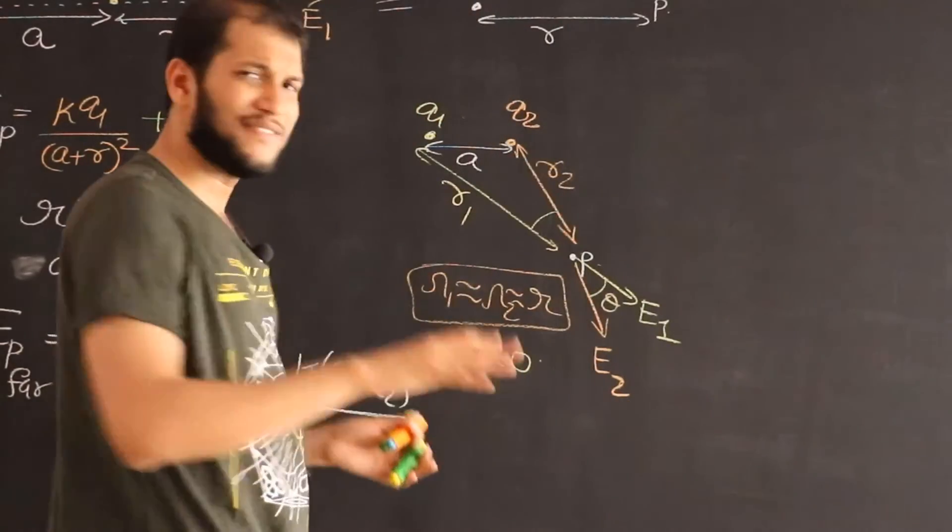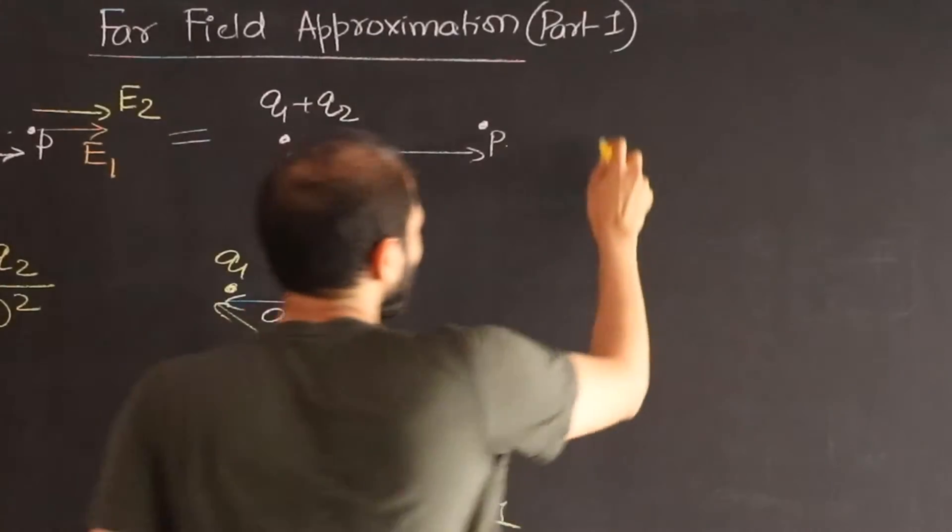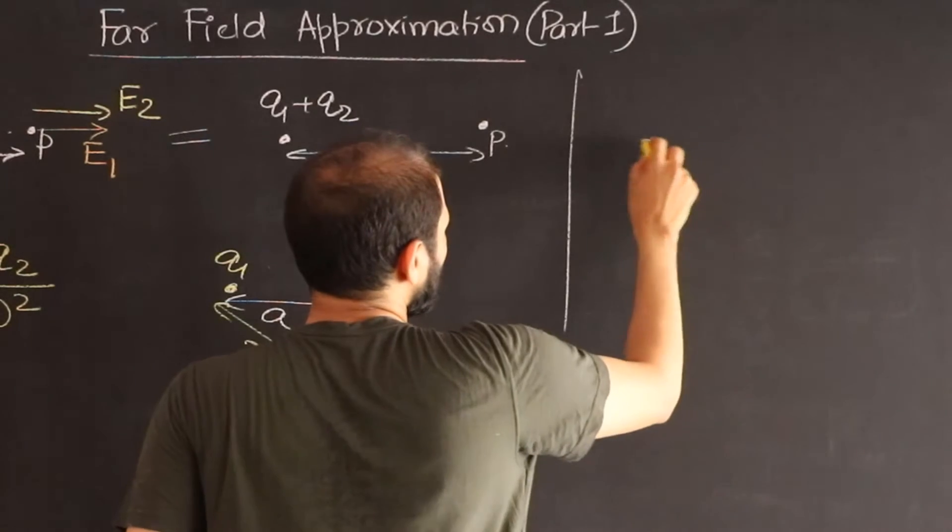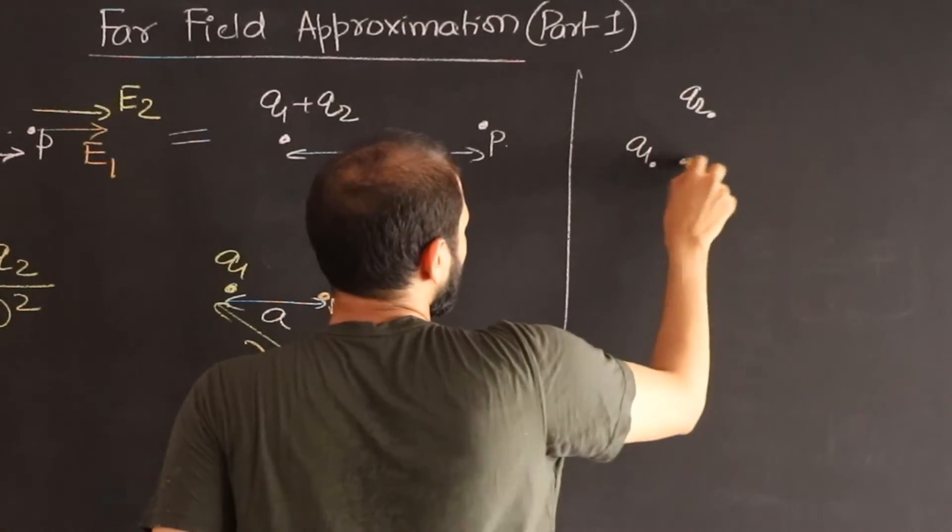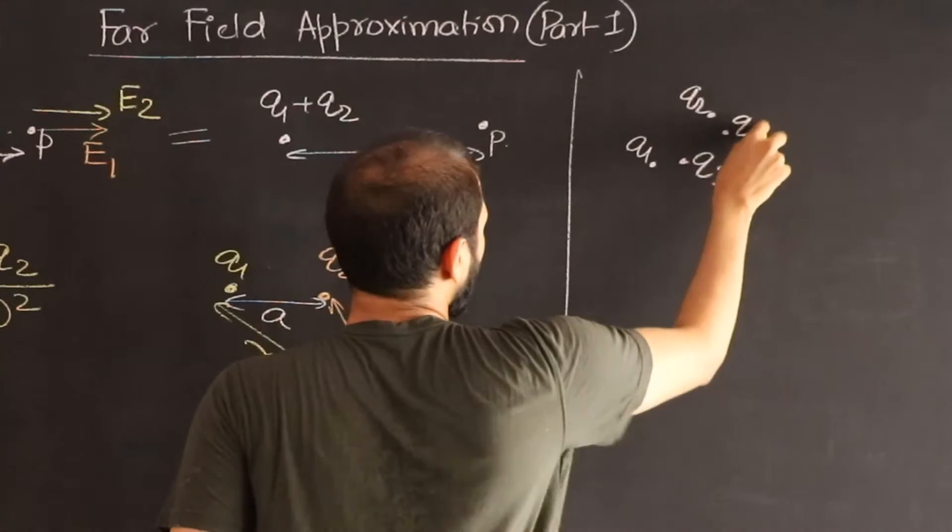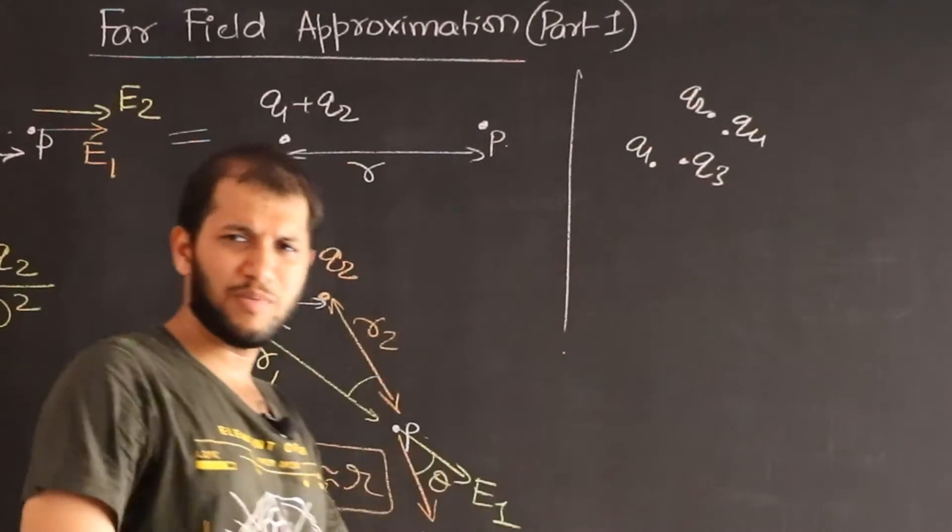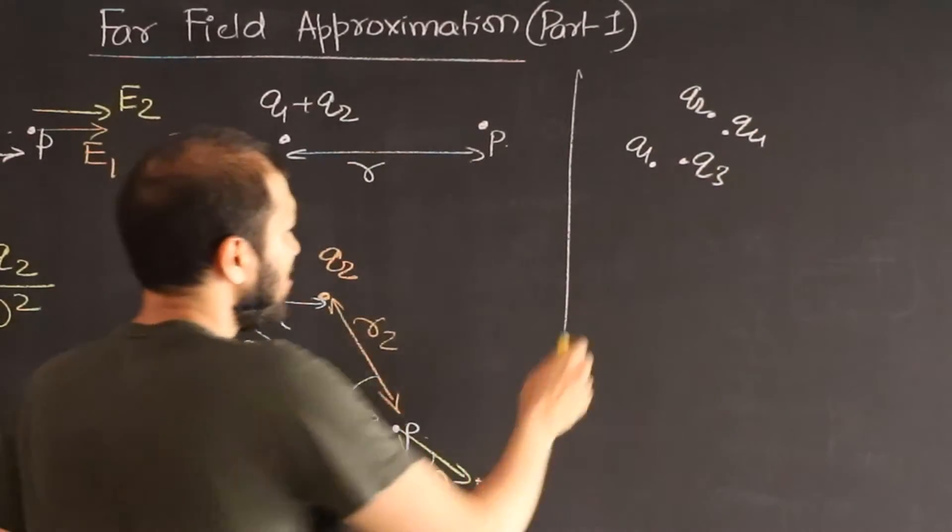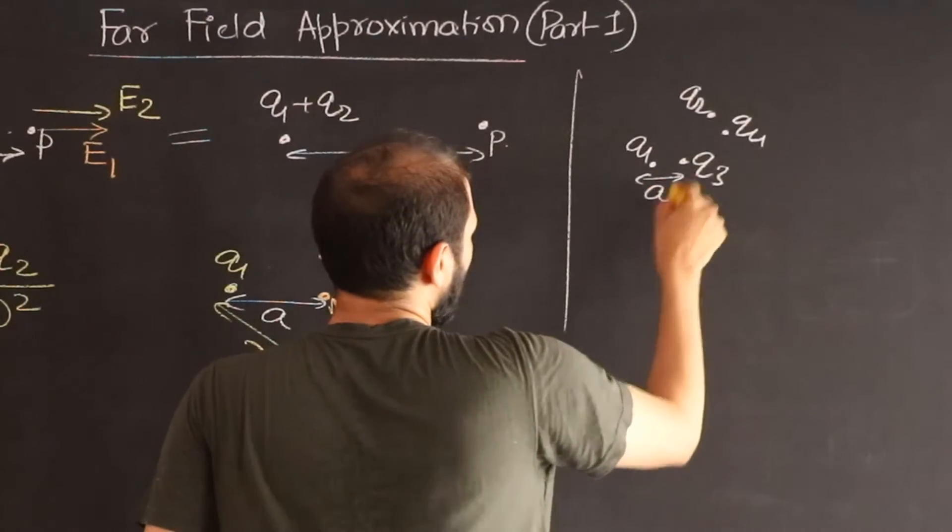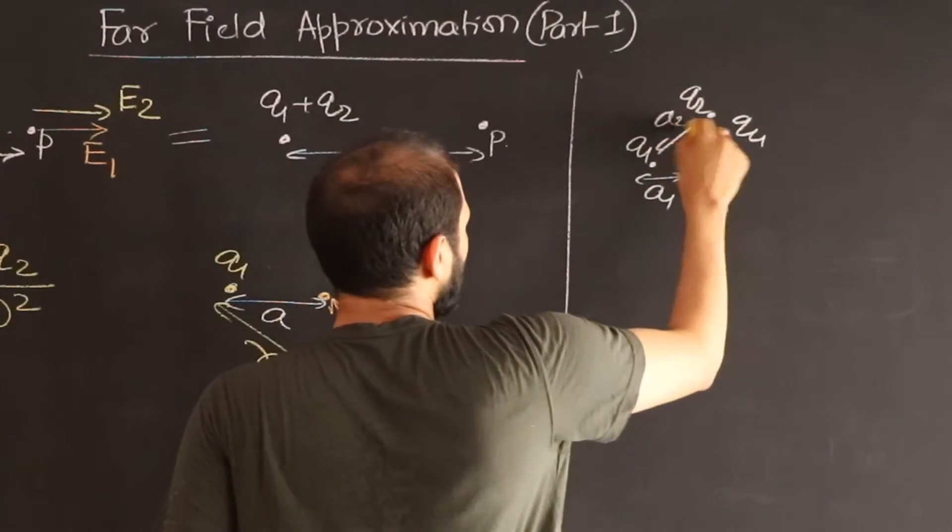So we could have something like this. We could have a cluster, say Q1 and Q2 and Q3 and Q4 and what not. There could be thousands of charges and each separation let's say a1 and the separation could be a2 and so on.